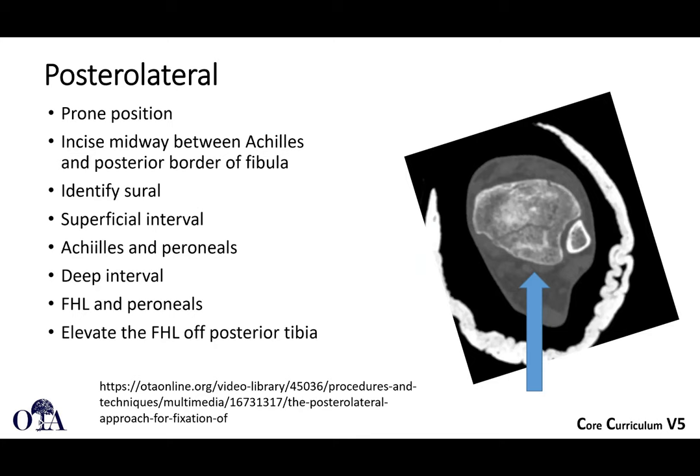For the posterolateral approach, to get great posterolateral exposure you'll probably need to be prone. The incision is midway between the Achilles tendon — which you can easily palpate — and the posterior border of the fibula. The sural nerve will be nearby, so identify it. You'll go between the Achilles and peroneals. The deep interval is between the flexor hallucis longus, which has a very low-lying muscle belly, and the peroneals. Control the bleeding there, then elevate the FHL — it's low-lying muscle off the posterior tibia, not just a cord-like tendon. Retract it to reach the posterolateral fragment.